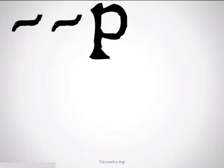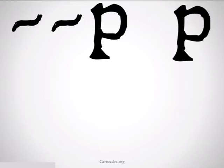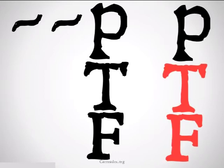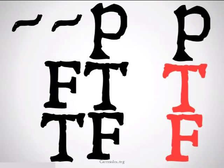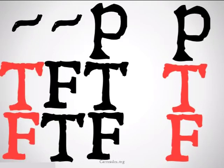Let's take a look at the truth table. We have not-not-p and p. We fill in the truth tables under p, we flip them for the negation, and flip them again for the second negation, and we end up back where we started — with our truth table being exactly the same for not-not-p and for p, so they are replaceable salva veritate.